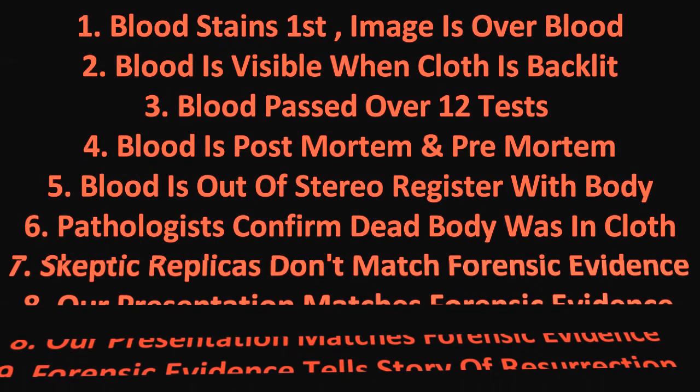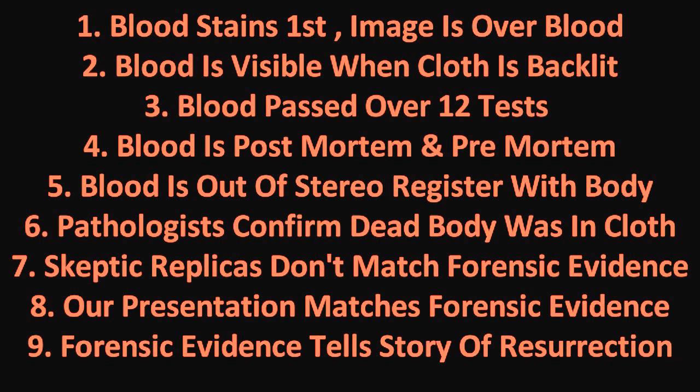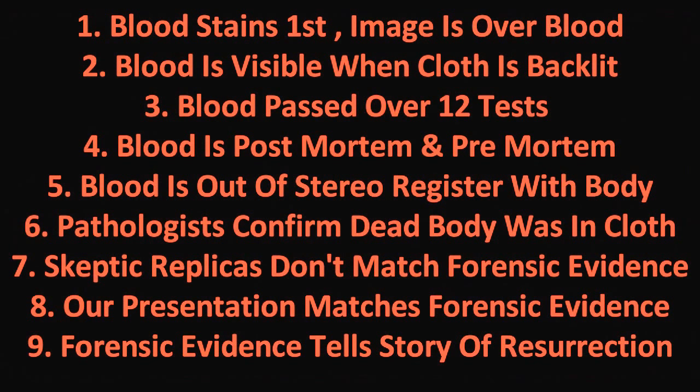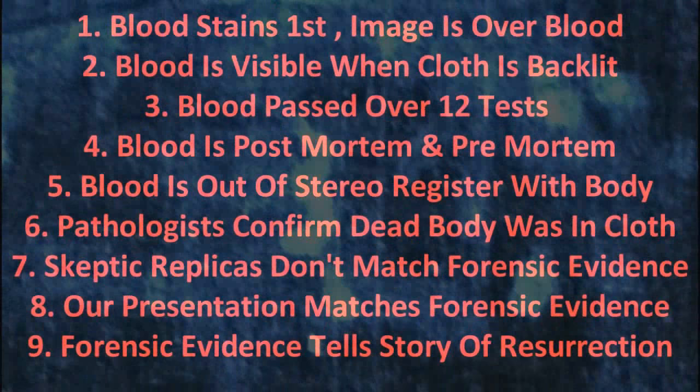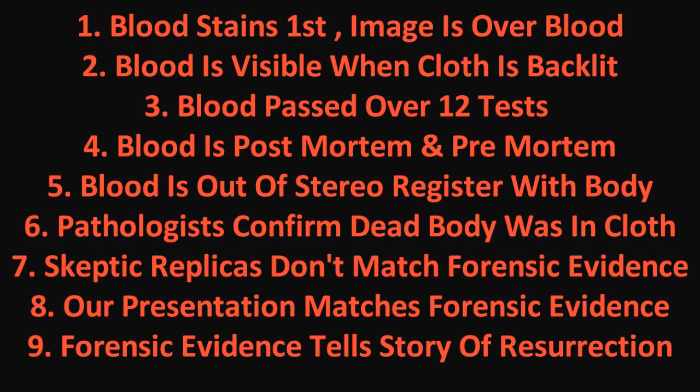Some important final points: number one, blood stains came first, images second — two separate events. Number two, blood is visible when the cloth is backlit because blood soaks all the way through, while the image doesn't, because it is so superficial. Number three, blood passed over a dozen tests to be genuine blood — four times what is required by law to be acceptable evidence in court. Number four, both post-mortem and pre-mortem blood are on the cloth. Number five, blood is out of stereo register with the body — interaction during the resurrection shifted the cloth. Number six, no fewer than seven pathologists confirmed a dead body that was scourged and crucified was in the cloth. Number seven, skeptic replicas do not match forensic evidence; our presentation does. The forensic evidence says this is what happens to linen when a body is resurrected.